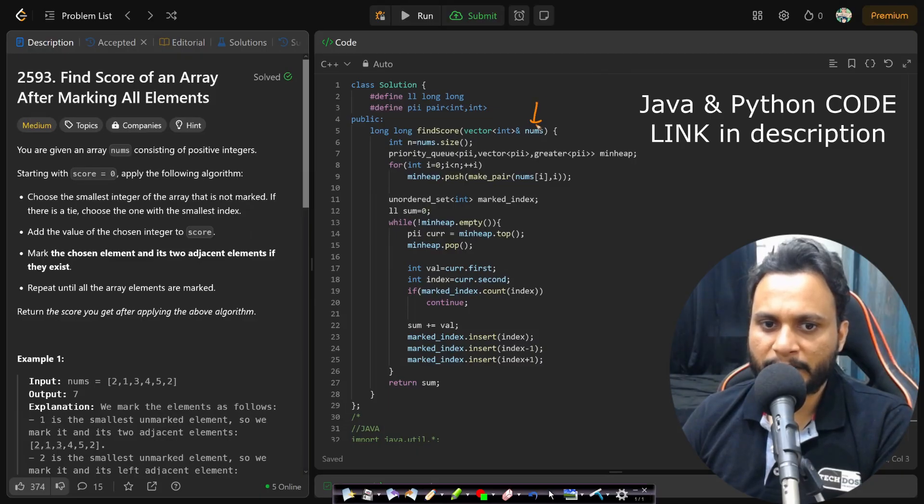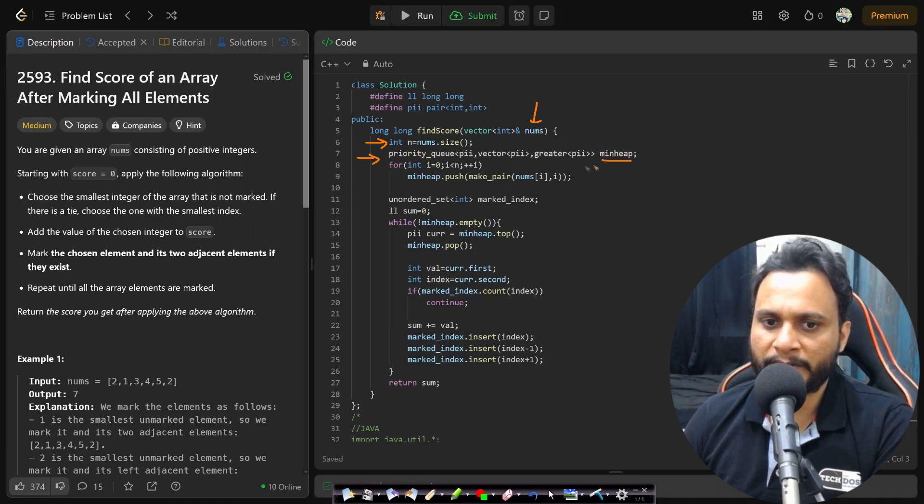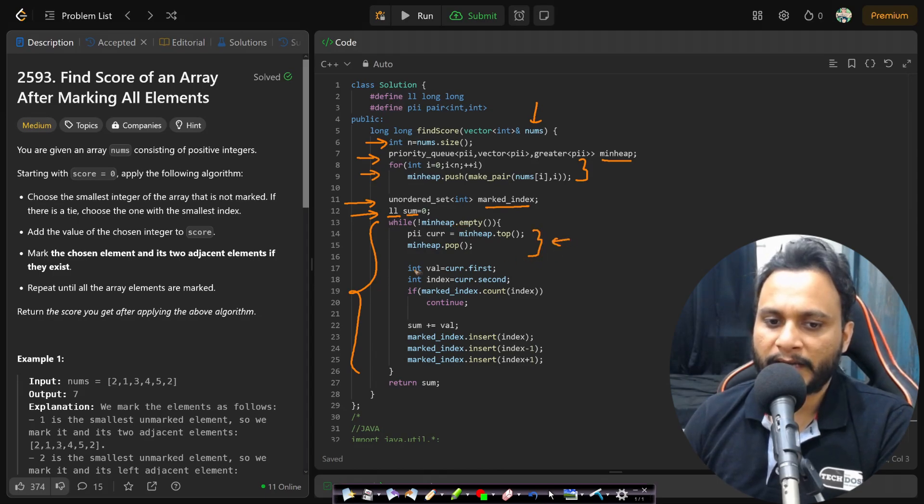In this problem we are given the nums array and then I will be finding the size of the array. I have defined the min heap here and I will be pushing all the items into the min heap one by one. I have taken an unordered set which is the marked index which will keep track of all the indices that have already been marked. Then I am taking a long long integer sum initialized with zero. So it will keep track of the score. Now I will be processing each and every item until the heap becomes empty. So I will be taking out the top of the heap and then I will be extracting the value and index from the heap.